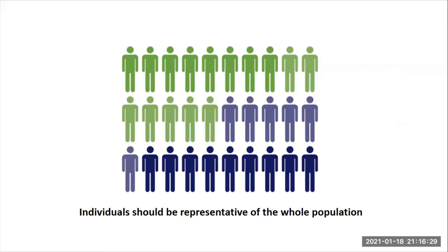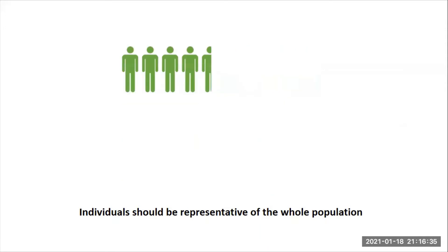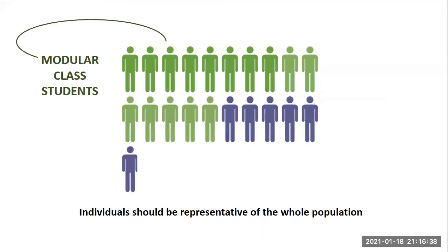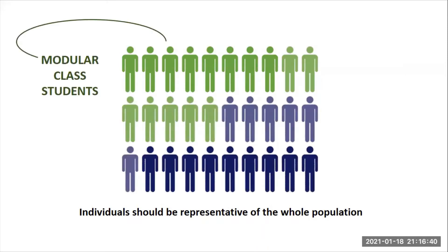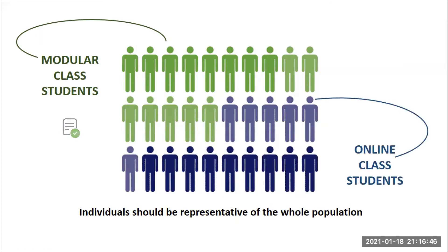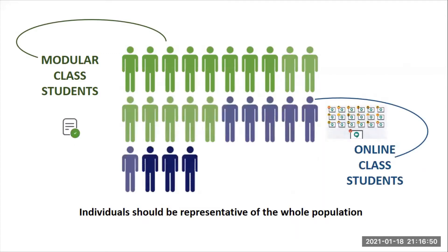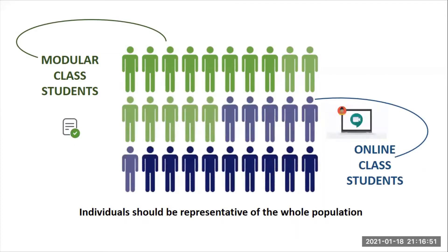If a sample is to be used, by whatever method it is chosen, it is important that the individuals selected are representative of the whole population. This may involve specifically targeting hard-to-reach groups. For example, if learning modalities were used to identify participants and you are only looking for modular class students, then the online class students would not be registered and therefore excluded from the study by default.